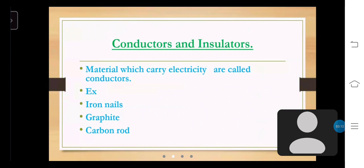Conductors and insulators: Materials which carry electricity are called conductors. Examples are iron nails, graphite, carbon rod.